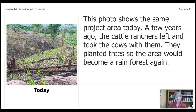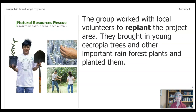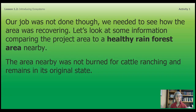This photo shows the same project area today. A few years ago, the cattle ranchers left and took the cows with them. They planted trees so the area could become a rainforest again. The group worked with local volunteers to replant the project area — they brought in young Cecropia trees and other important rainforest plants. Our job is not done though; we need to see how the area is recovering. Let's look at some information comparing the project area to a healthy rainforest area nearby that was not burned for cattle ranching and is in its original state.